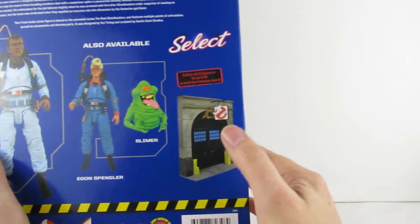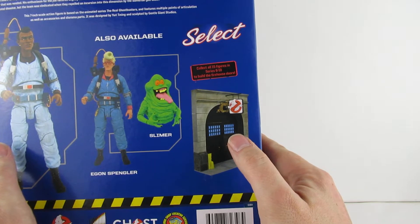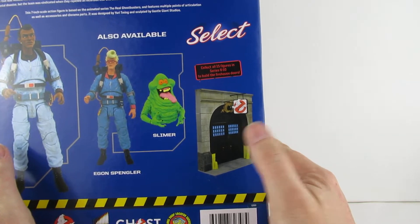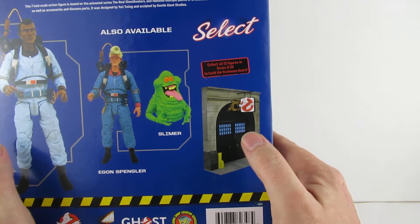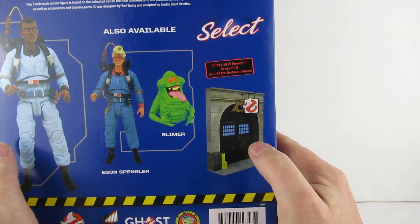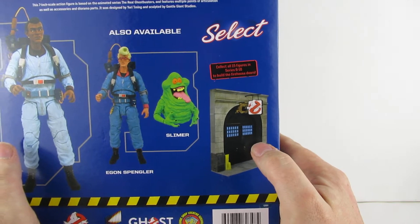So collect all 15 figures in series 6 and 10 to build the firehouse doorways. I'm not really fussed for building the firehouse doors so those pieces are probably going to be sat somewhere being unused.